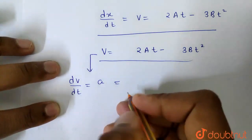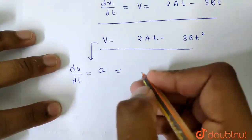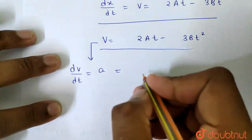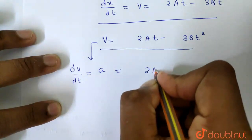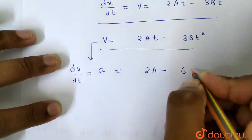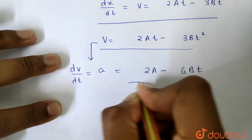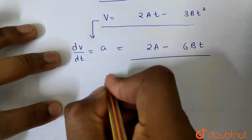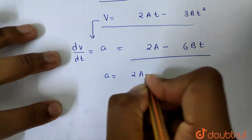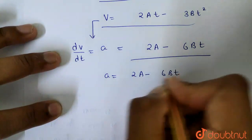So acceleration will be... if I do dv by dt, that will be acceleration. So how much acceleration will be? It will be differentiation. So what will be differentiation? 2A minus 6Bt. So I have acceleration as a function of time: 2A minus 6Bt.